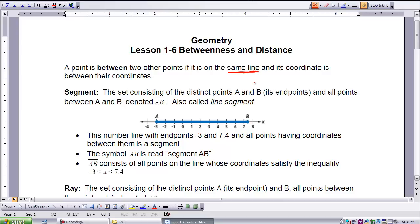A segment is also called a line segment. So this number line with endpoints negative 3 and 7.4, and all points having coordinates between them, makes this segment. So the segment isn't just here and here, the points A and B, it includes everything in between.